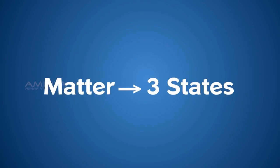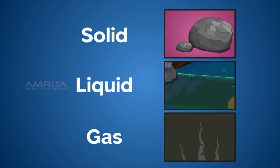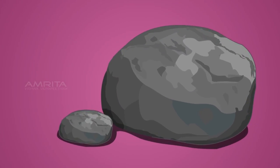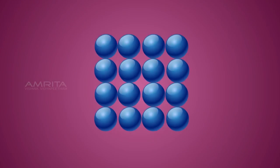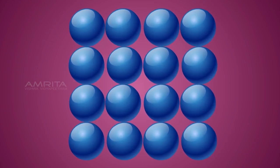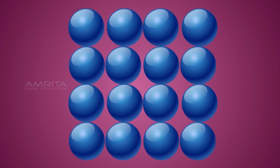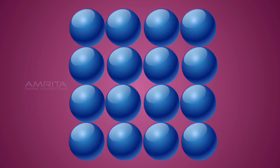Matter around us exists in three states: solid, liquid and gaseous. Matter in the solid state has definite shape and volume. This is because the particles in solid are tightly packed, fit together in a regular way and there is no big space between the particles.